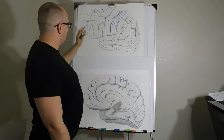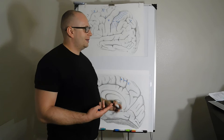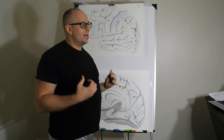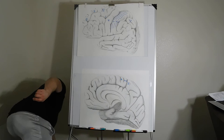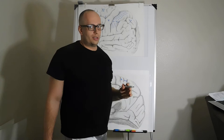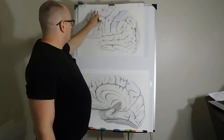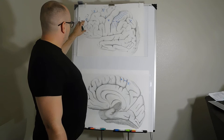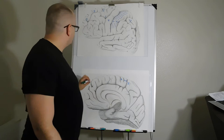Brodmann area 9 is also part of the dorsolateral prefrontal cortex, important for short-term memory and actually executing tasks — shuffling information from the rest of your brain. Brodmann area 10 is part of your orbital frontal cortex but also has short-term memory functions that overlap with the dorsolateral prefrontal cortex, and it probably stores some autobiographical memories.